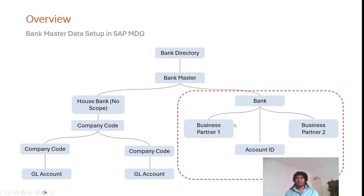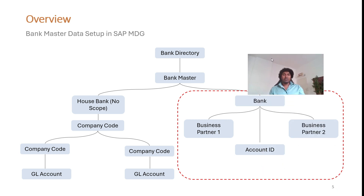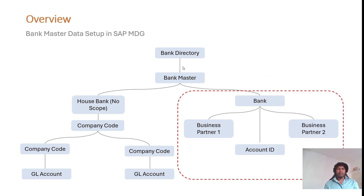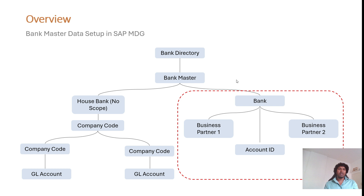Within the S4 system there are two types of bank master data: house bank and normal bank master data. House bank is used internally by companies to post internal expenses — it doesn't make sense to centralize it since every local system has its own house banks. However, it makes sense to centralize the bank master data used in the business partner, for paying vendors or receiving money from customers.